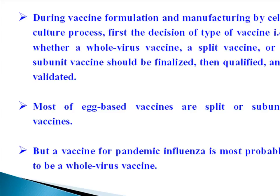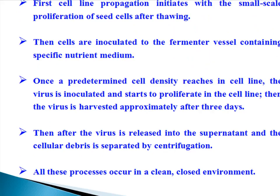During vaccine formulation and manufacturing by cell culture process, first the decision of type of vaccine — whether a whole virus vaccine, a split vaccine, or a subunit vaccine — should be finalized, then qualified and validated. Most egg-based vaccines are split or subunit vaccines, but a vaccine for pandemic influenza is most probably a whole virus vaccine. Cell line propagation initiates with small-scale proliferation of seed cells after thawing. Then cells are inoculated into the fermenter vessel containing specific nutrient media. Once a predetermined cell density is reached, the virus is inoculated and starts to proliferate in the cell line. Then the virus is harvested approximately after three days, released into the supernatant, and the cellular debris is separated by centrifugation. All these processes occur in a clean, closed environment.